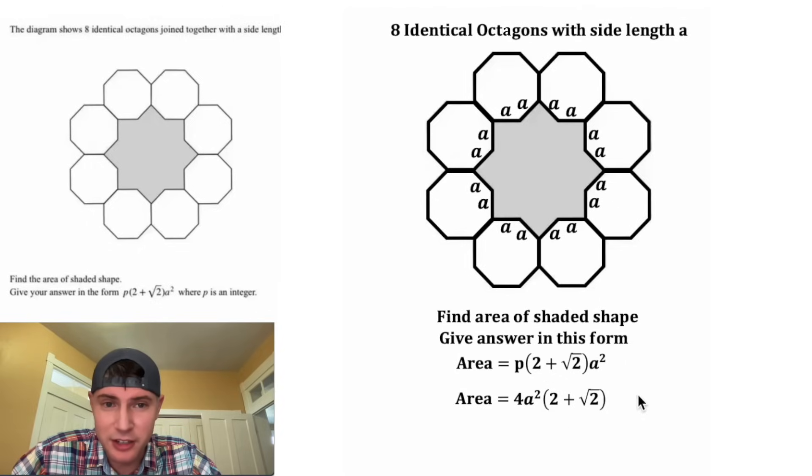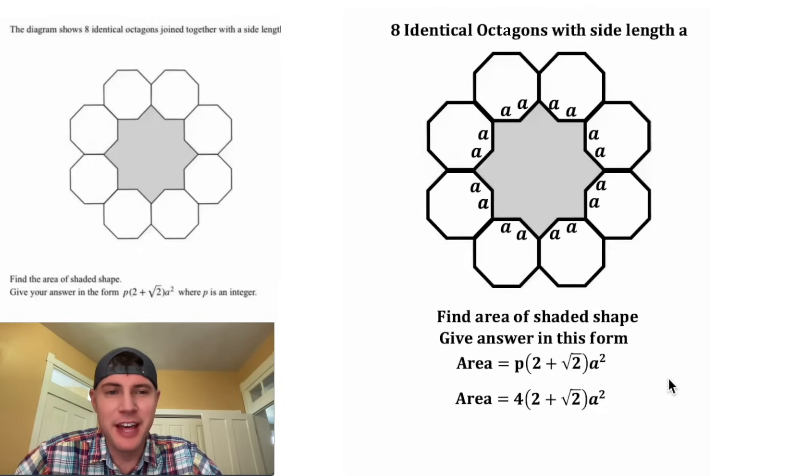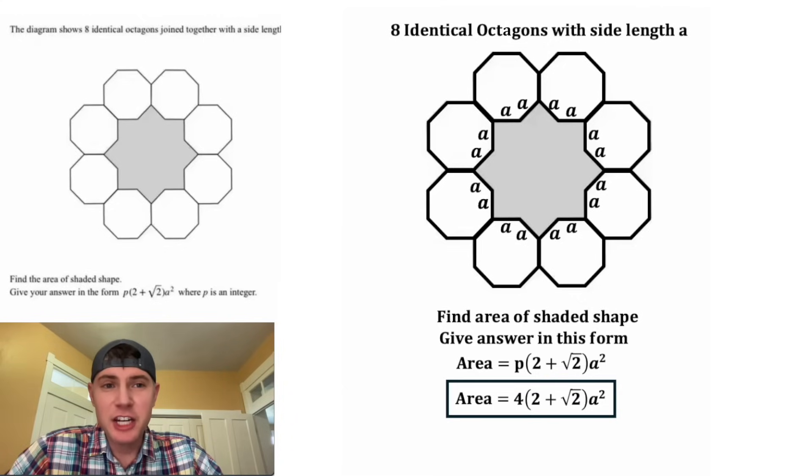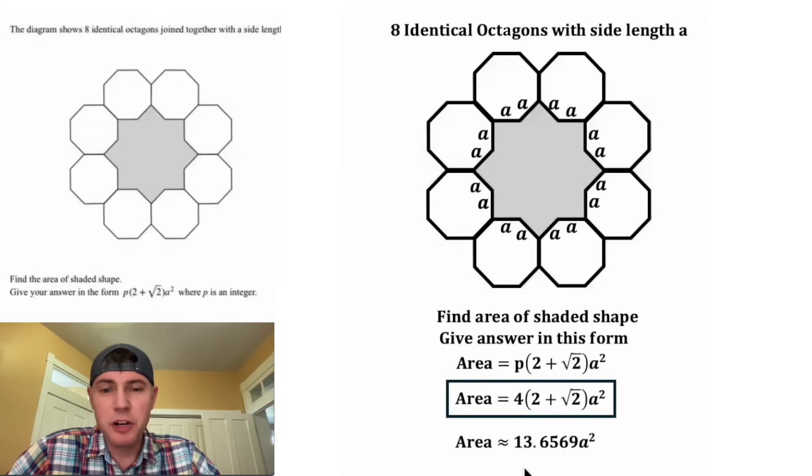This almost looks identical. We just need to rearrange a little bit, and that is the answer to our question. So the area of this shaded shape is equal to 4 times the quantity 2 plus square root of 2 times A squared. And that's approximately 13.6569 A squared. How exciting. How exciting.